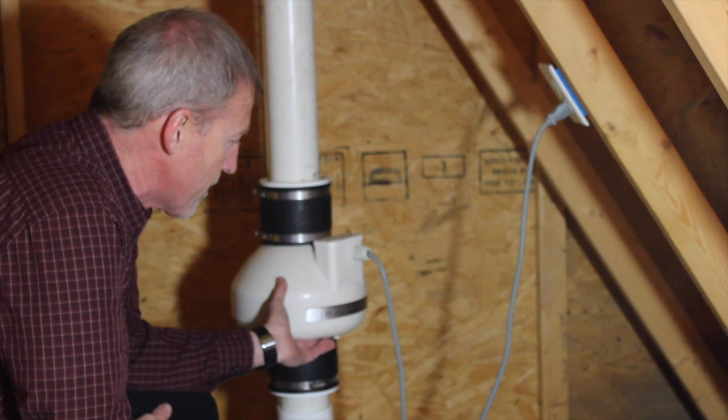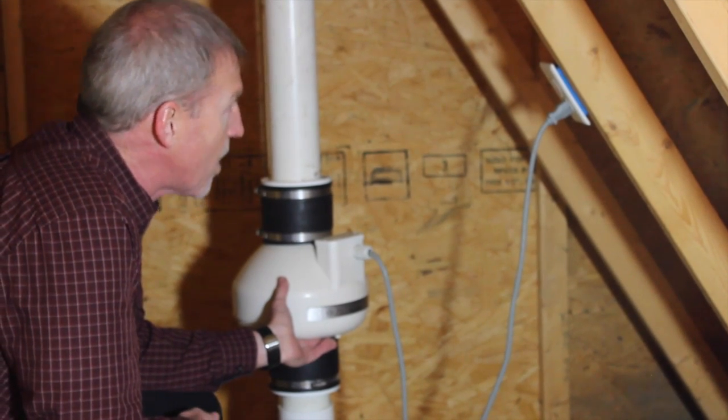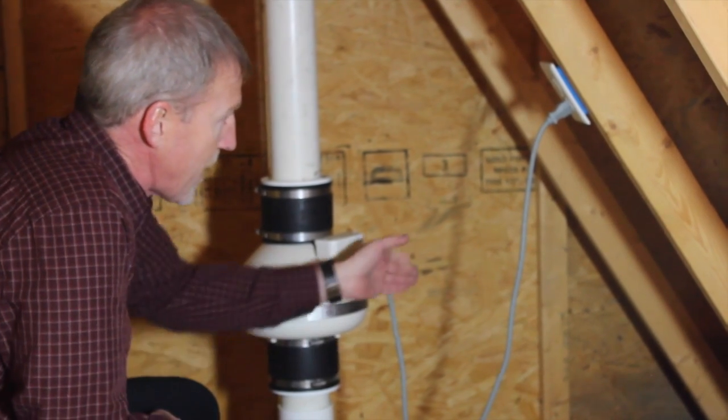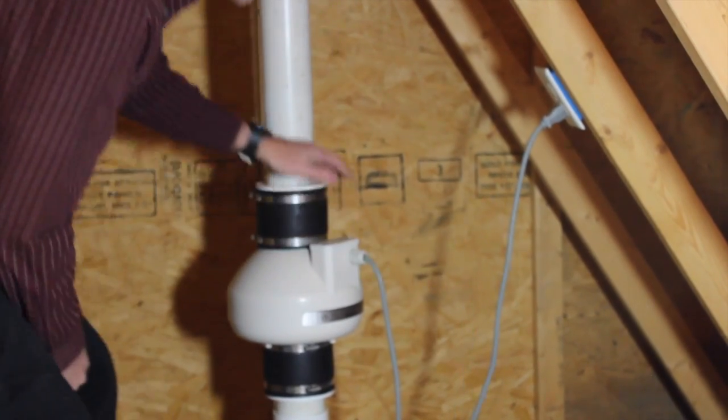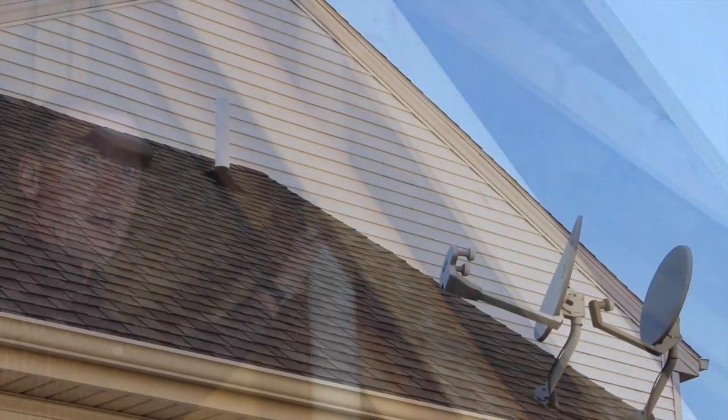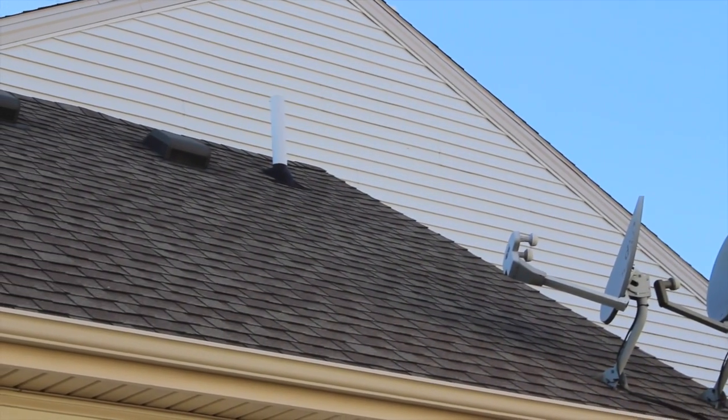But this is what's actually pulling the air from the basement all the way up through. It's going to have an electrical disconnect here and then the pipe goes up through the roof and looks like a normal plumbing vent above the roof.